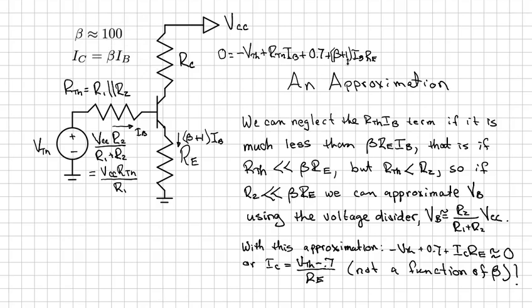So we can often ignore this 1 in the beta plus 1 term because 101 versus 100 is almost going to make no difference.